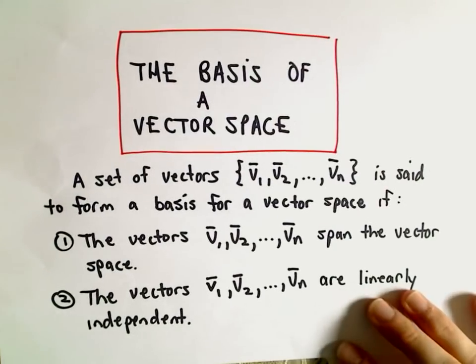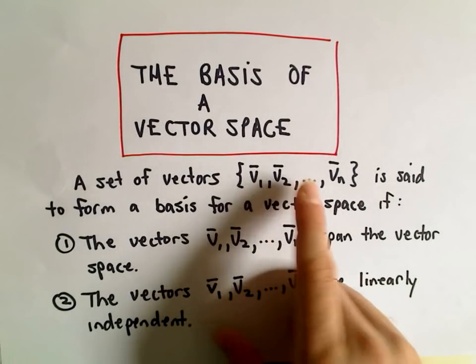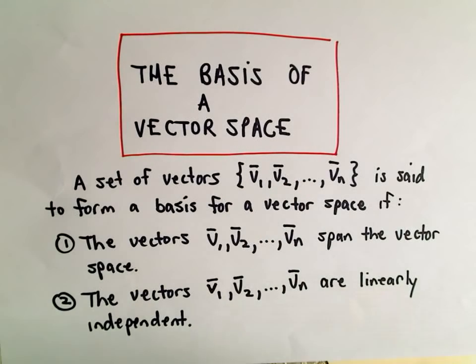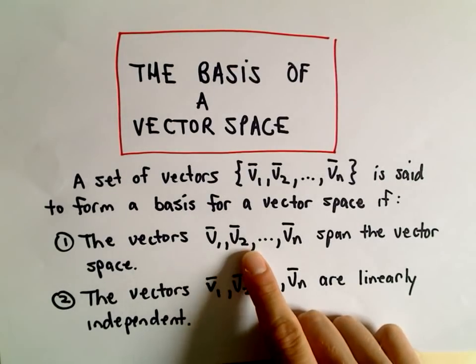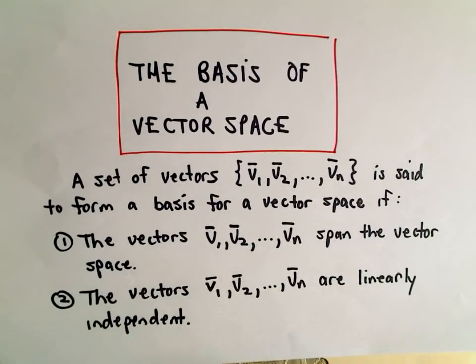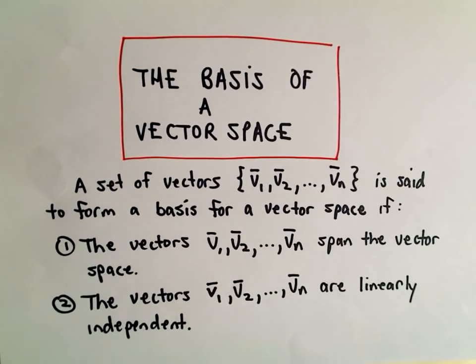All right, in this video I'm going to look at the notion of a basis for a vector space, and all a basis is, it just ties together the notions of linear independence along with the notion of a spanning set. So we say a collection of vectors v1, v2, up to v sub n, we say that those are a basis for the vector space if two things happen.